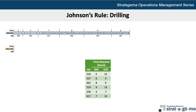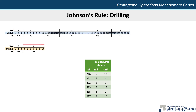Now we will proceed with scheduling the drilling department. Since all jobs must go through the milling department, the sequencing won't change. We just have to determine how long it will take, since the times required in the drilling department are different than in milling. Since our first job 258 must go through milling first, the earliest it can start in the drilling department is at the beginning of the fourth hour, meaning the drilling department will be idle for the first three hours. Job 258 starts at the beginning of the fourth hour, takes 7 hours to complete, and will finish at the end of hour 10.